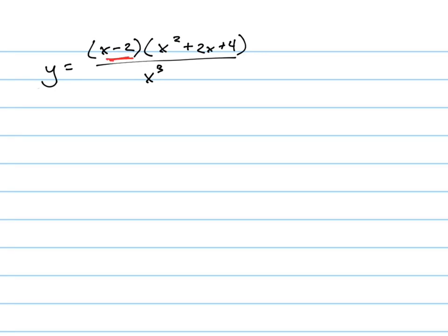Probably the easiest way is to distribute these two things together. So we're going to distribute the x in. The x, if I distribute the x in, I'll get x cubed plus 2x squared plus 4x.